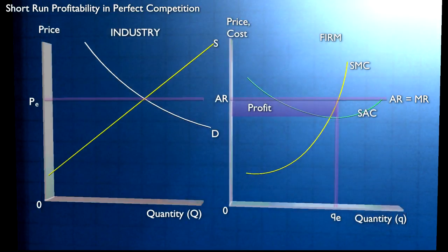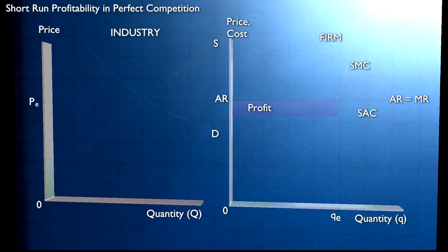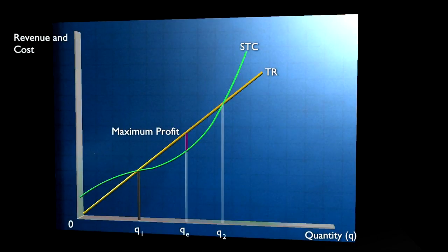And I hope you can see that that level of output which maximizes profit, QE, is the same level of output that we had on our first diagram where we looked at the totals. If you go back to that diagram for a minute, the slope of the short run total cost curve, which we called marginal cost, has the same slope at the profit maximizing level of output as the slope of the total revenue curve. Well the slope of the total revenue curve is marginal revenue. Marginal cost equals marginal revenue. So we could confirm on that diagram the answer that we've just got from our average and marginal diagram.